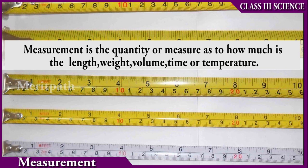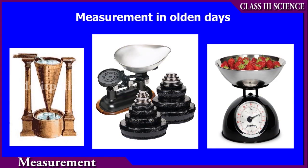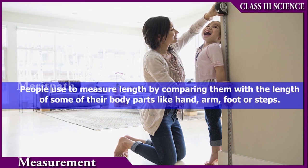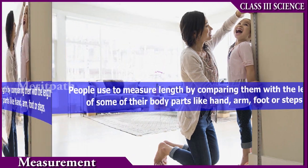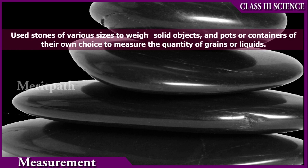Measurement is nothing but the quantity of something. In olden days, people used to measure length by comparing them with the length of some of their body parts like hand, arm, foot, or steps. They used hand span, foot span, cubit, or a stride. They used stones of various sizes to weigh solid objects, and they kept pots or containers of their own choice to measure the quantity of grains or liquids.